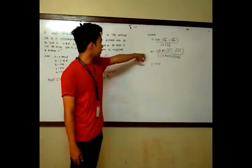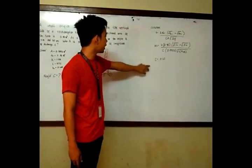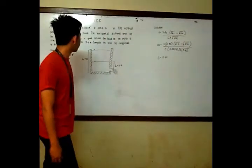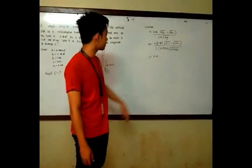So by solving for c, we got 0.62. So that's the coefficient of discharge, 0.62.